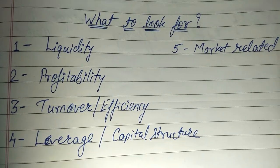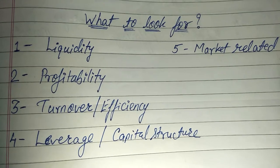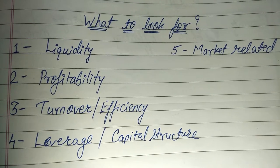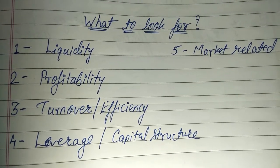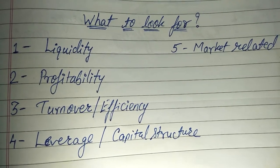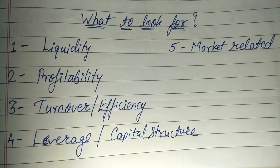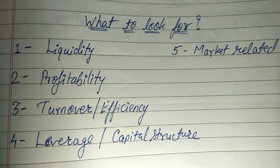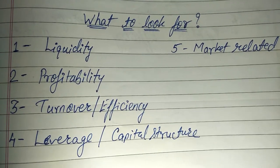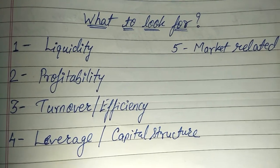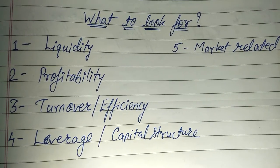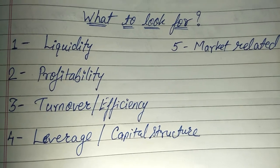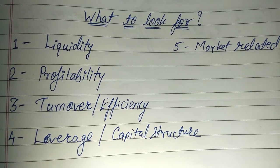Now let us understand in this video what to look for. In the previous video we had started this, but due to some technical issue we had to close that video midway. In this video, we'll continue the same part — what exactly we need to look at to analyze the financial position of a company. Whenever you have financial statements of any company to be analyzed, you should look at these five elements for an overall analysis.